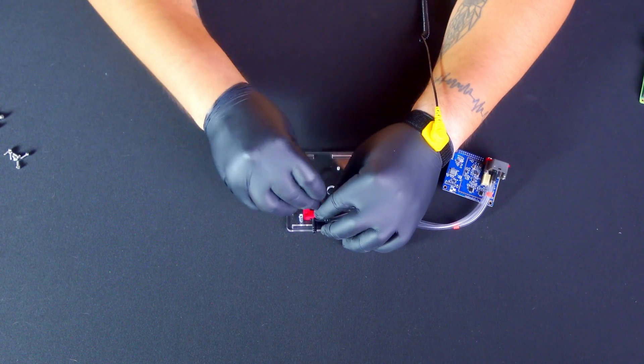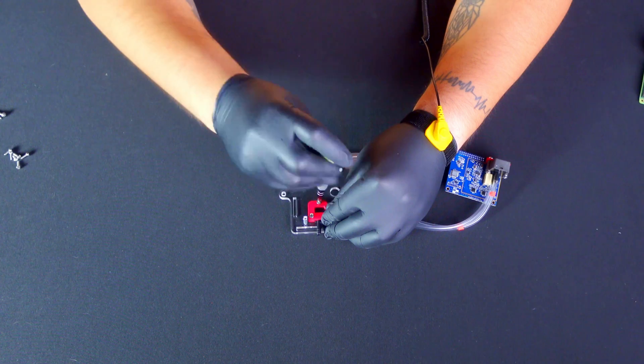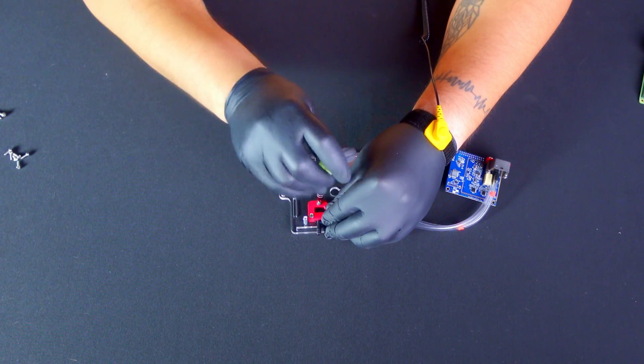Fit this part in the red acrylic support and fasten it to the base with two large screws. Please be careful when manipulating the tubes and try not to bend them as much as possible during the installation.